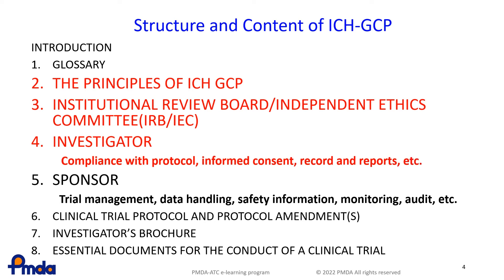Section 4 describes the roles of investigators, who are mainly responsible for conducting clinical trials at medical institutions. The roles of the investigators include obtaining informed consent from the subjects, compliance with the protocol of the trial, reporting the necessary information to the sponsor and the IRB, etc. Section 5 describes the requirements for the sponsor. The roles of the sponsor include planning, managing, and auditing of the clinical trial, as well as reporting necessary information, such as adverse drug reactions to the regulatory authority, investigators, and IRB, etc.